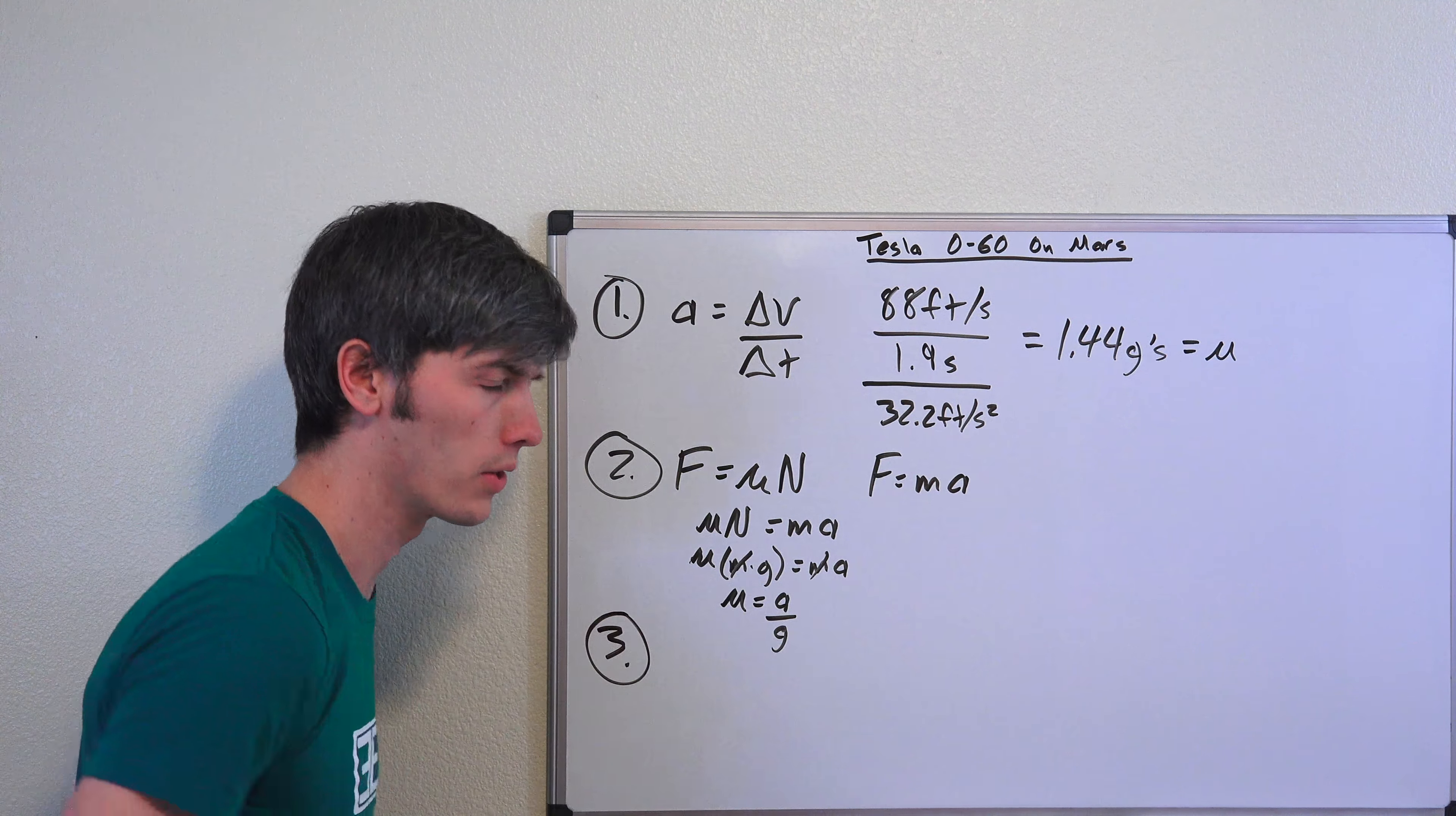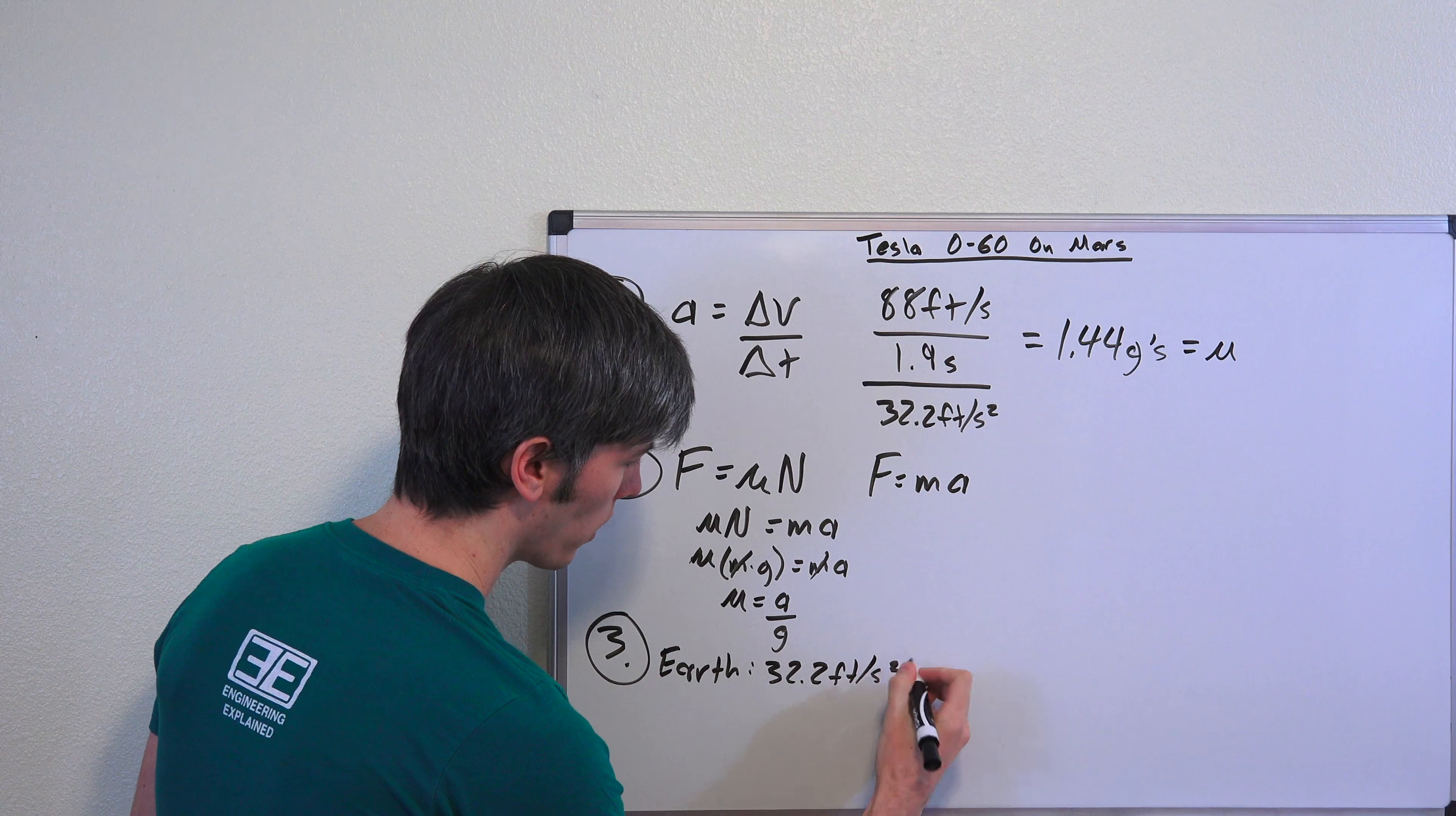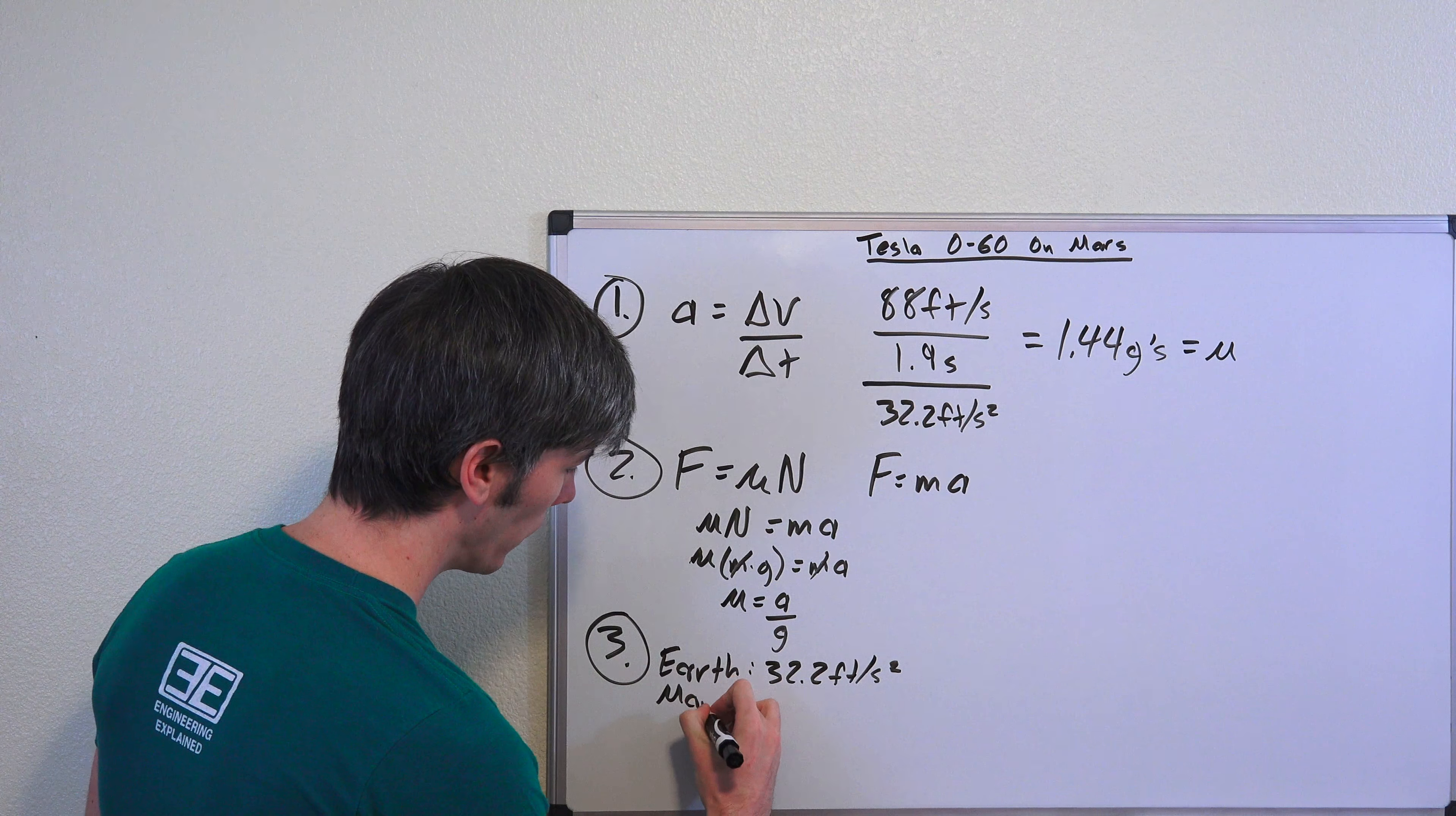Okay, well now we're going to Mars. And on Mars, what is gravity? So on Earth, gravity is 32.2 feet per second squared. On Mars, it's about a third: 12.18 feet per second squared.